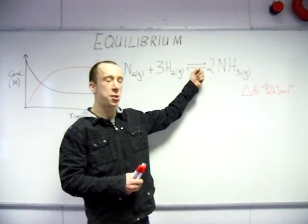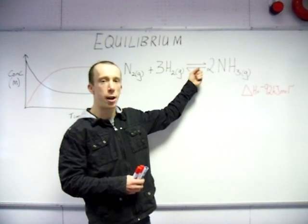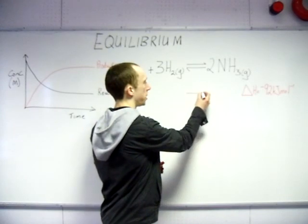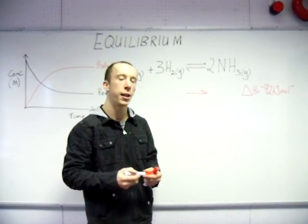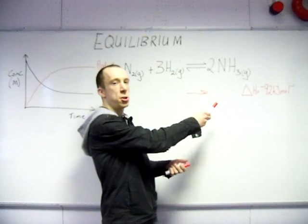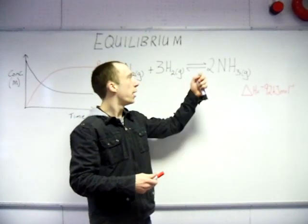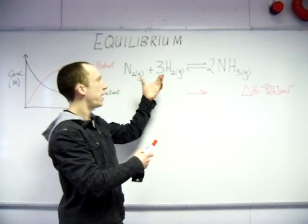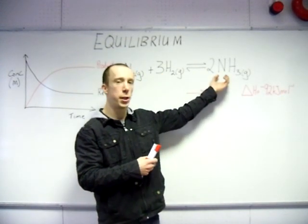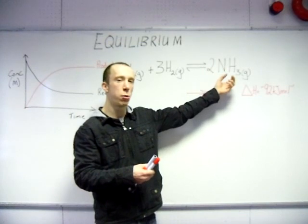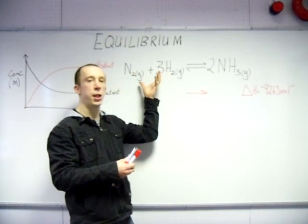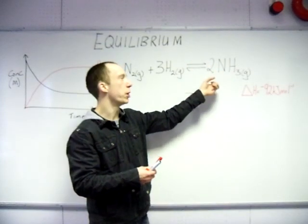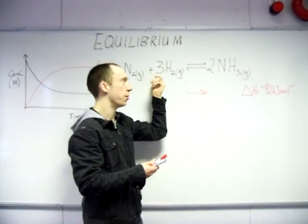It introduces this symbol, a reversible reaction. Most reactions you'll have seen so far have just had the simple straight arrow. In other words, all reactants turn into products. What dynamic equilibrium introduces is the fact that nitrogen and hydrogen can combine to give ammonia, but ammonia can also break apart to give you back hydrogen and nitrogen. So a reversible reaction is one where the products can change back into the reactants.